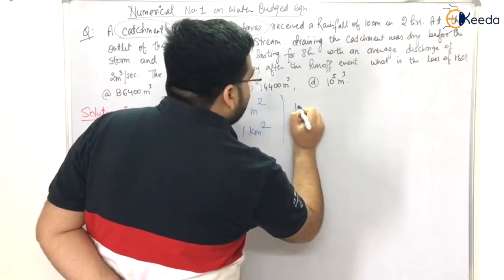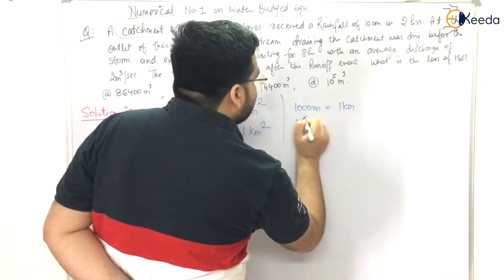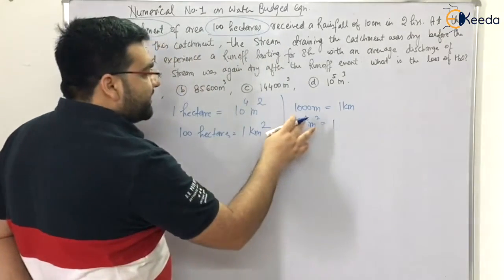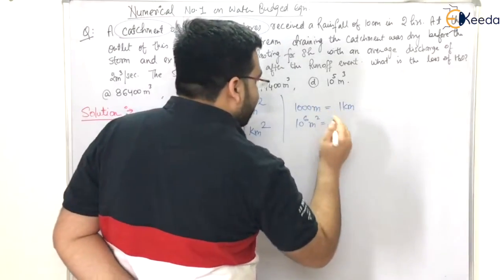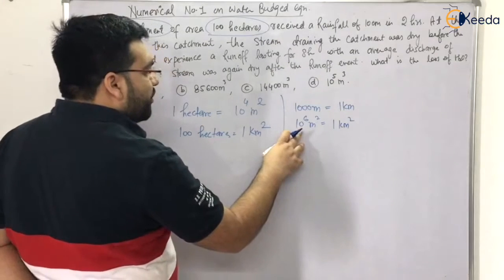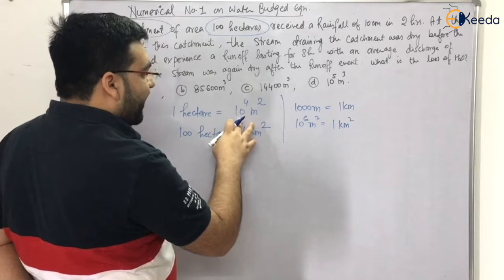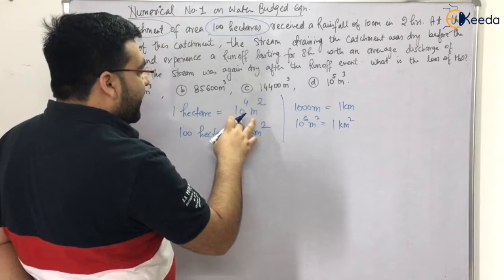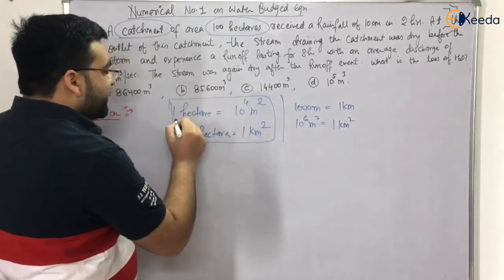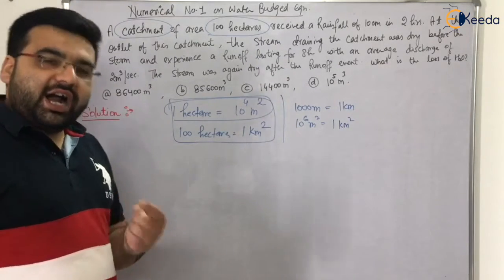To verify: 1000 meters is one kilometer, so 10⁶ m² is one kilometer square. Dividing 10⁶ by 10⁴ gives 10², meaning 100 hectares equals one kilometer square. Just remember this. Hectare is a very common unit in hydrology as well as in irrigation.